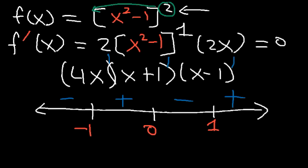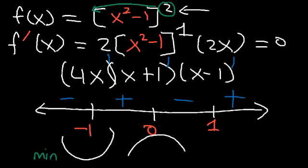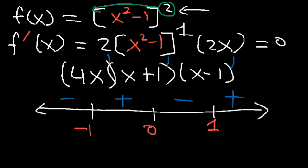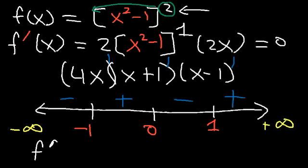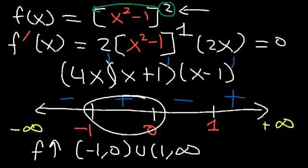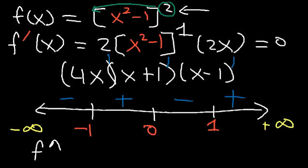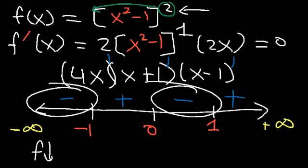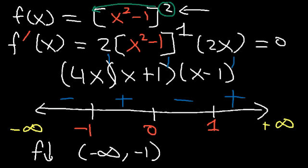At x = -1, the function decreases then increases, so -1 is a local minimum. At x = 0, it increases then decreases, so 0 is a local maximum. At x = 1, it decreases then increases, so 1 is a relative minimum. The function is increasing on (-1, 0) ∪ (1, ∞) and decreasing on (-∞, -1) ∪ (0, 1).